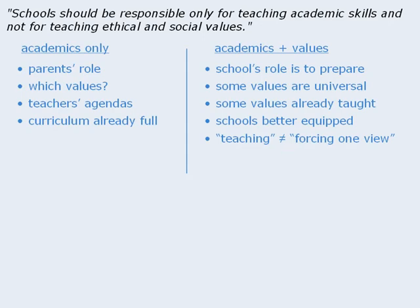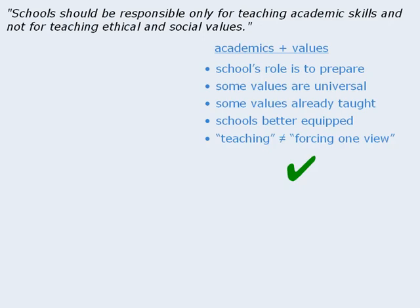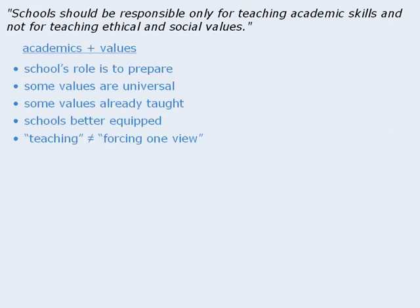And it could be argued that teaching values does not necessarily mean forcing a single view on students. So that's an idea of the brief points we should try to identify for both sides of the issue. At this point, we should decide which side we're going to defend. Let's defend the position that schools should be responsible for teaching ethical and social values in addition to academic skills. So let's remove the other points so we can focus on these points.